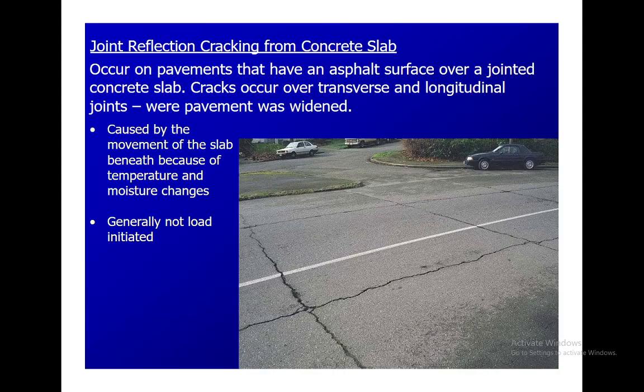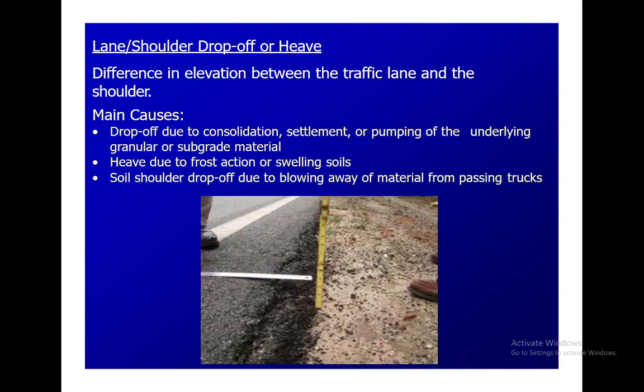The next type is joint cracks from a concrete slab. Joint cracks occur on pavement that has an asphaltic surface over a jointed concrete slab. Cracks occur over transverse as well as longitudinal joints. Such cracks basically occur from movement of the slab below due to temperature variation and moisture changes. Joint reflection cracks are not load-induced; they occur because of temperature and moisture changes within the pavement surface.